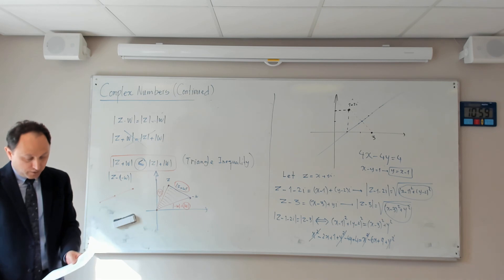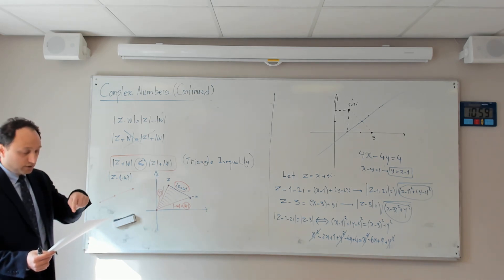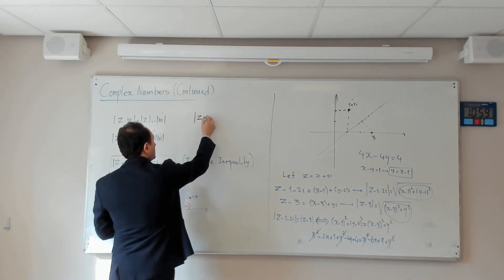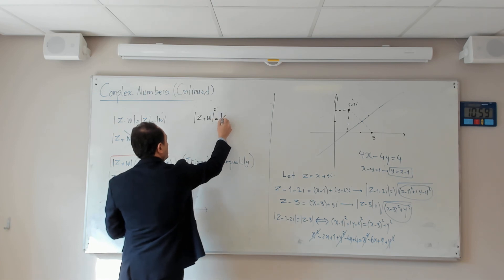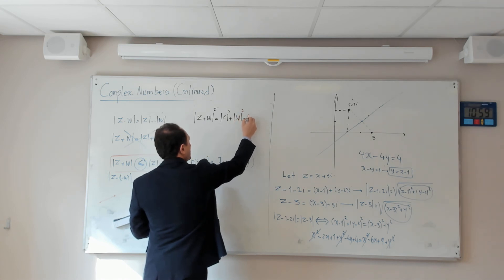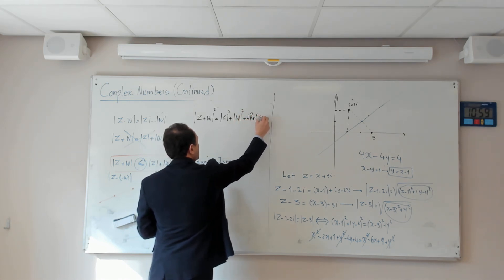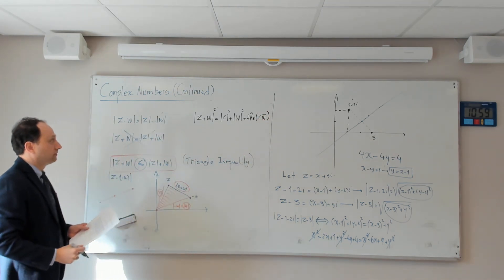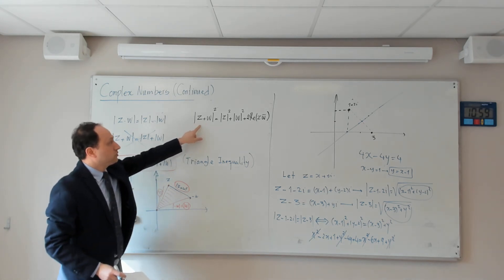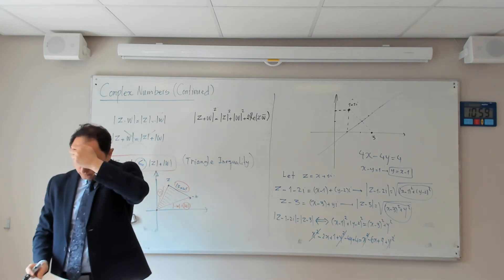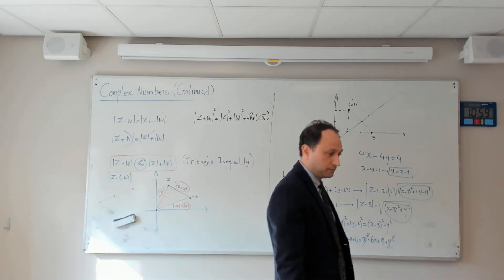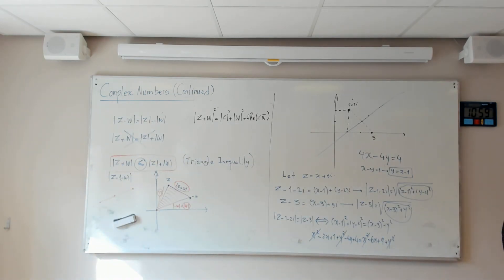In a real (non-degenerate) triangle, equality never holds, but if you flatten the triangle into a line — a degenerate triangle — then equality holds. So the correct version is less than or equal to. I'll leave you with one exercise to prove: |z+w|² = |z|²+|w|²+2·Re(z·w̄). I want you to prove this identity for any complex numbers z and w. We'll start solving it next time.